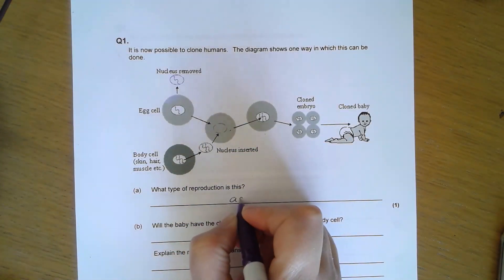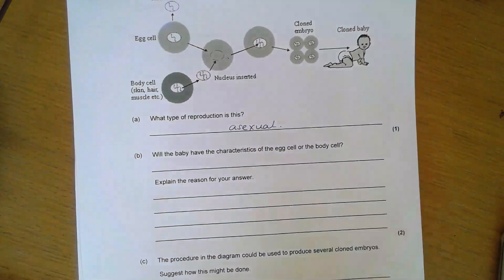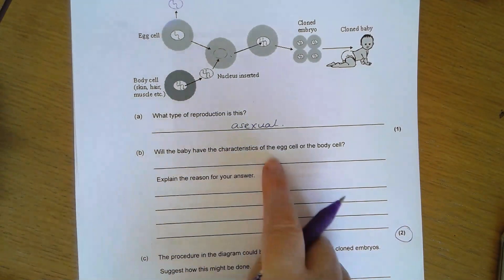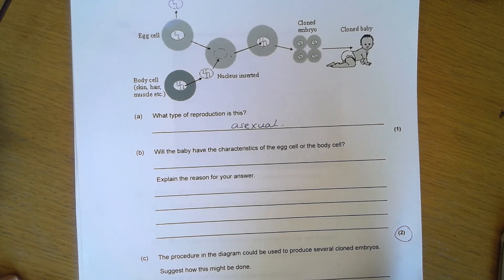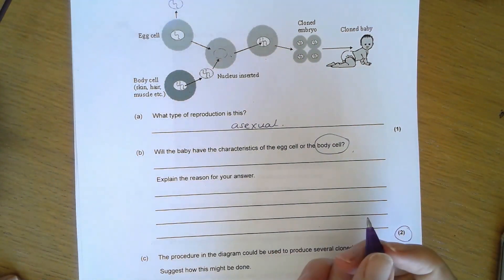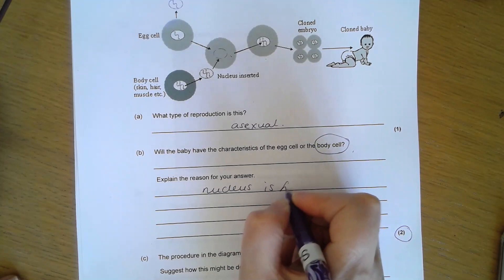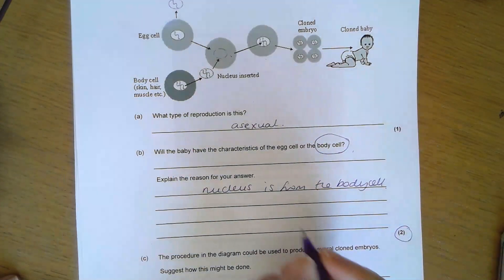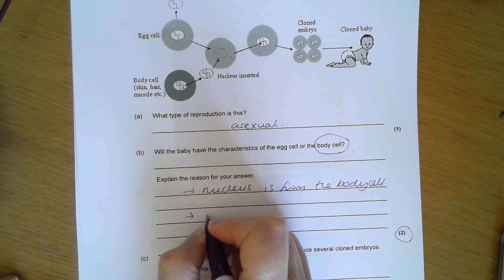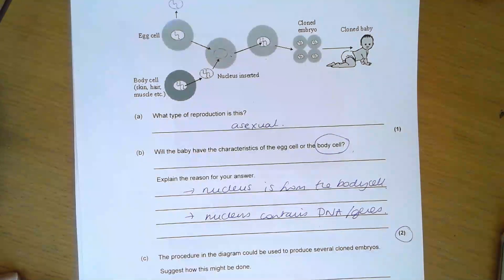What type of reproduction is this? It is asexual reproduction. Will the baby have the characteristics of the egg cell or the body cell? For two marks, the baby would have the characteristics of the body cell because the nucleus that is used is from the body cell, and the nucleus from the egg cell has been removed. Crucially, it's the nucleus that contains the DNA or genes or genetic information.